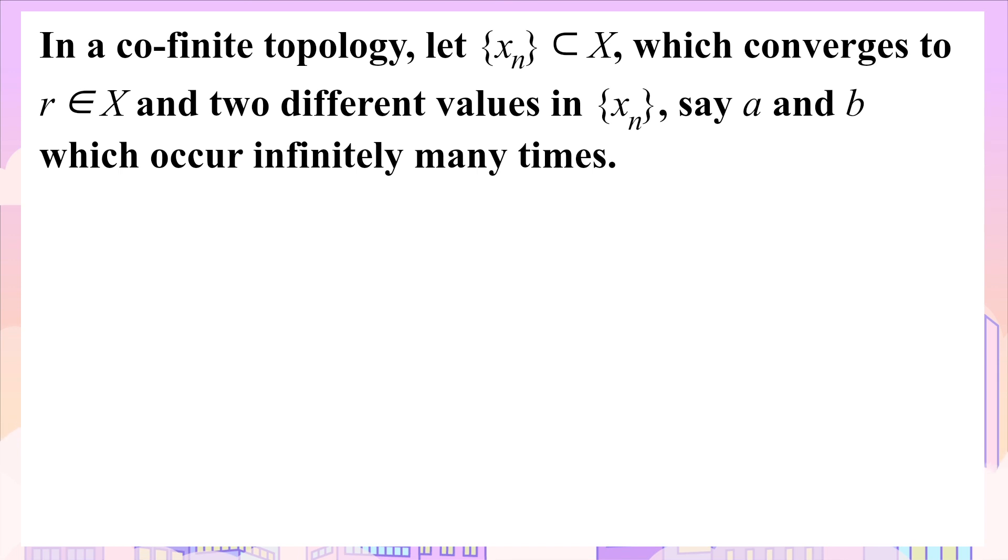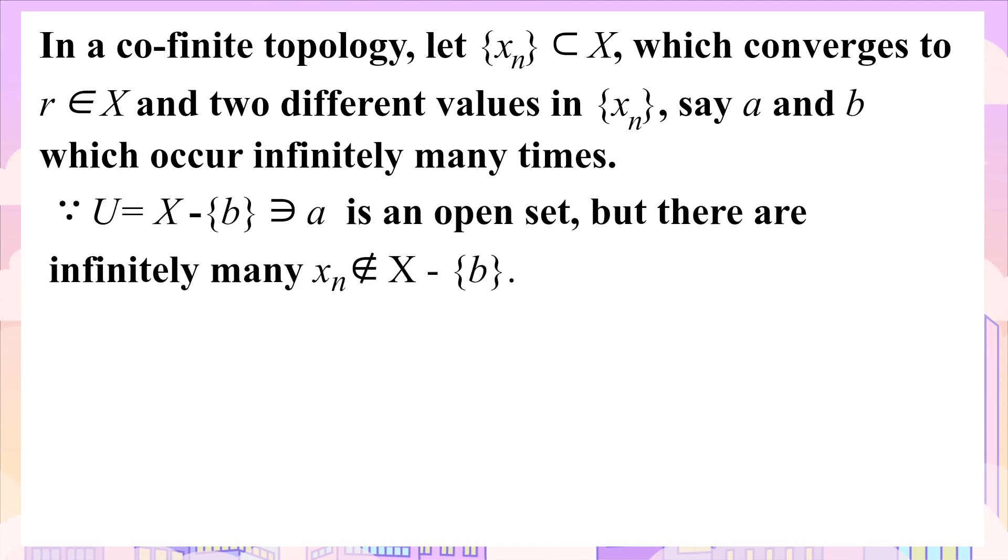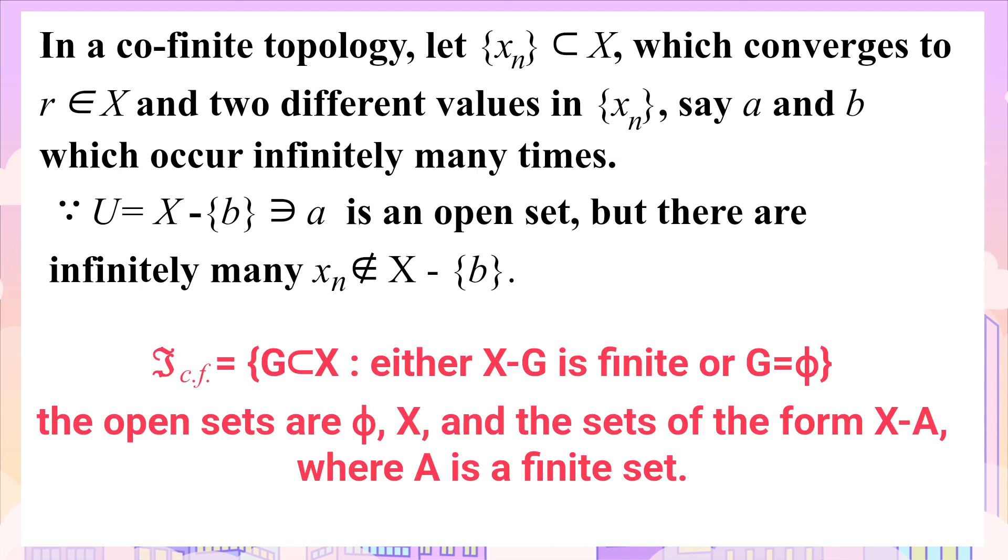And two distinct values in {xₙ}, say a and b in X, which occur infinitely many times. Since both a and b are elements of X, and by definition of co-finite topology, the open sets are in the form of complement of a finite set, that is X minus a finite set.